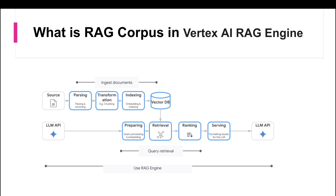When creating a RAG corpus, Vertex AI RAG engine offers RAG managed DB as a default choice of vector database, which requires no additional reasoning or managing. Vertex AI RAG engine basically automatically creates and manages the vector database for you. So when I say RAG corpus, it means the indexing — don't get confused with that. But in addition to the default RAG managed database, Vertex AI RAG engine also provisions and brings a vector database for you to use within the RAG corpus.